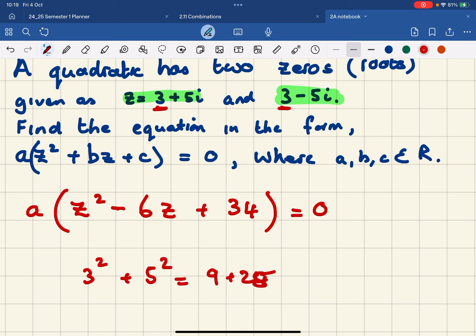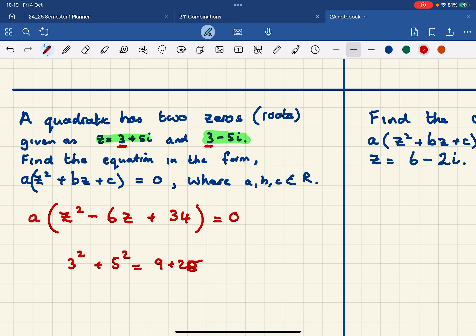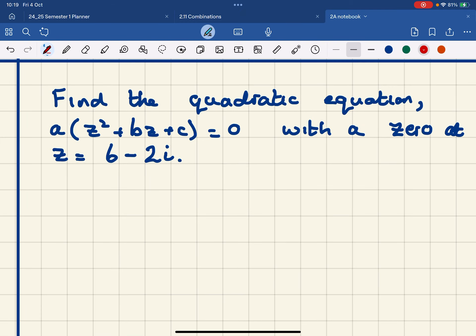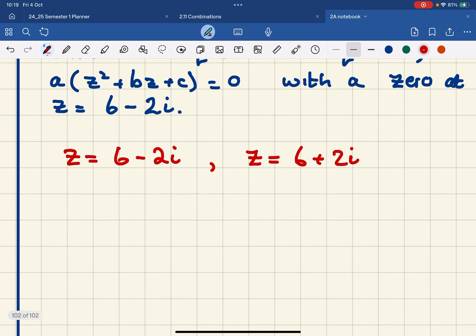So that's how I can make up an equation from the roots. And finally, if I'm only given one zero, the other zero or root is the conjugate. Quadratic equations always come in pairs for imaginary numbers.